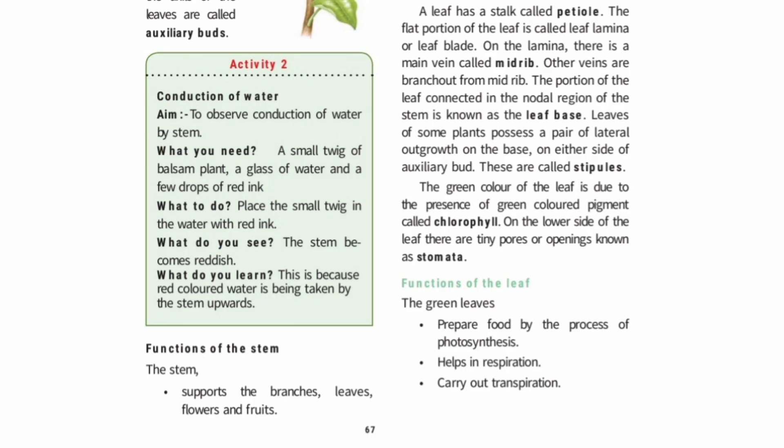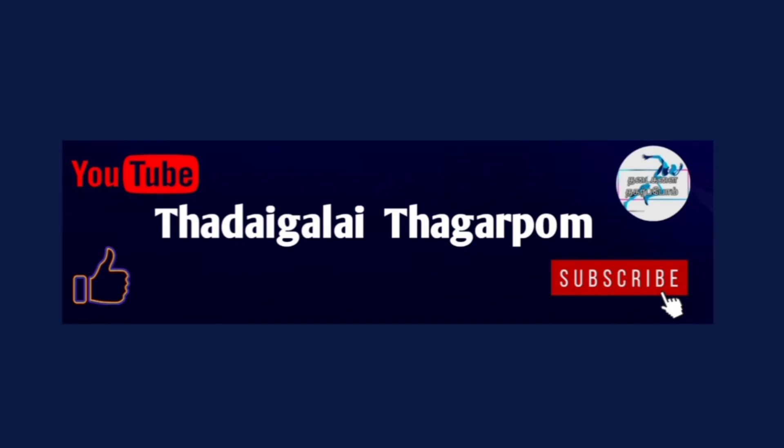Transpiration: the roots absorb a large amount of water. Some water is used in food preparation by the leaves. The excess water is released as water vapour into the atmosphere through the stomata. This process is called transpiration. Because of this process, the surroundings of plants remain cool. This is the remaining portion — we will continue in the next video. If you found this video helpful, please like, share, and subscribe.